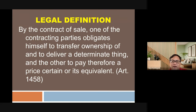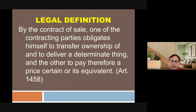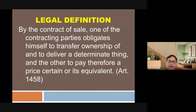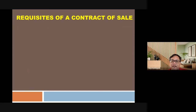The definition of a contract of sale is found in Article 1458 of the Civil Code: one of the contracting parties obligates himself to transfer ownership of and to deliver a determinate thing, and the other to pay a price certain in money or its equivalent.